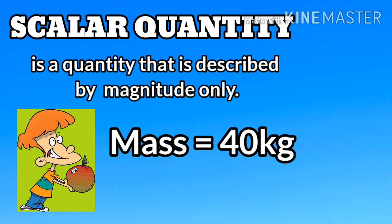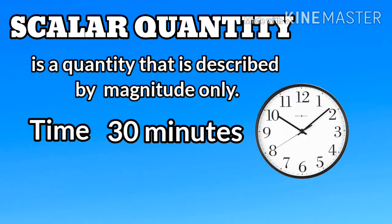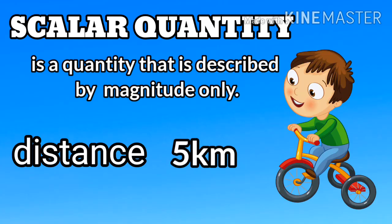A scalar quantity is a quantity that is described by magnitude only. Examples include mass: 40 kilograms, where 40 is the magnitude. Time is another example: 30 minutes, where 30 is the magnitude. Distance is another example.